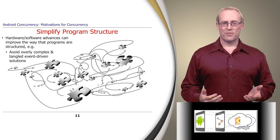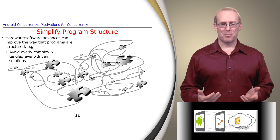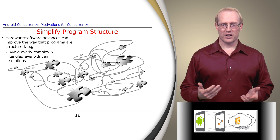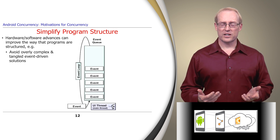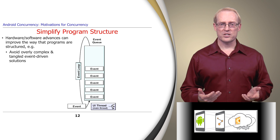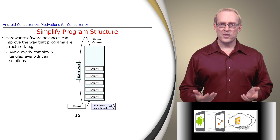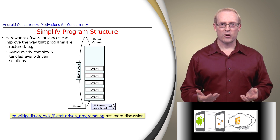Hardware and software advances can help improve the way programs are structured to avoid overly complex and tangled event-driven software architectures. Historically, the GUIs in early versions of Windows, Mac OS, and Unix were structured using an event-driven programming model, where a single event loop processed user interface events and initiated file and network I/O operations in one thread of control. This link provides more information on event-driven programming.